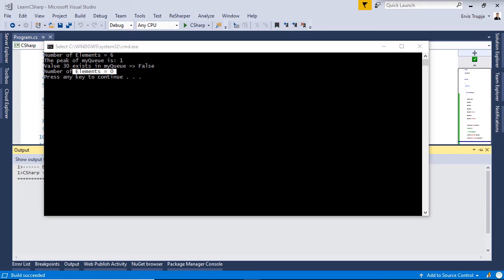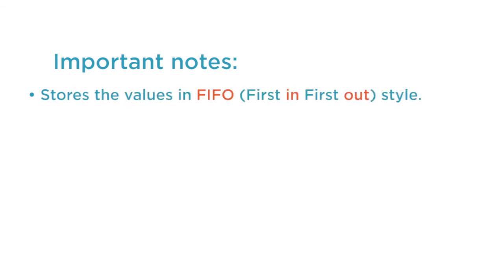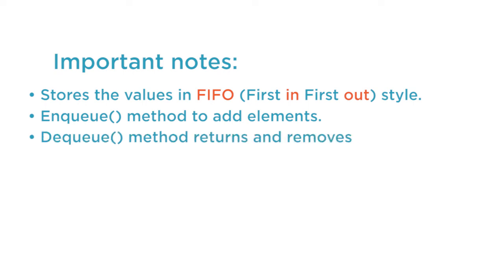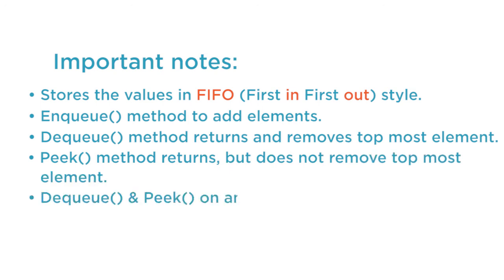So this covers the Queue collection. To recap: the queue stores values in FIFO style — first in, first out. Use the Enqueue method to add elements, the Dequeue method to return and remove the topmost element from the beginning of the queue, and the Peek method to return but not remove the topmost element. Calling Dequeue or Peek on an empty queue will throw an exception.